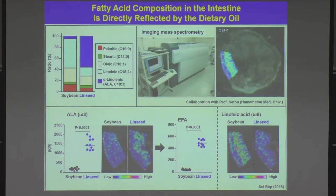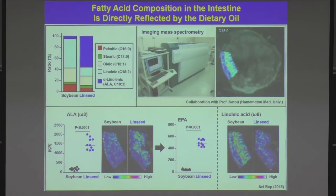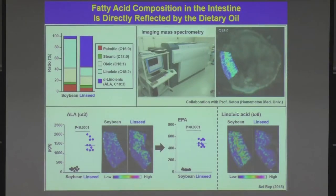We applied the same systems to see the distribution of linoleic acid, an omega-6 fatty acid abundant in soybean oil. Unlike ALA, linoleic acid is preferentially observed in the soybean oil groups, suggesting that omega-3 and omega-6 fatty acid compositions in dietary oils directly affect the fatty acid compositions in the intestinal compartment. Additionally, ALA is converted into EPA in the body. Consistent with ALA levels, EPA was strongly elevated in the linseed oil groups, suggesting that not only the fatty acids themselves but also their metabolites are affected by dietary oil composition.